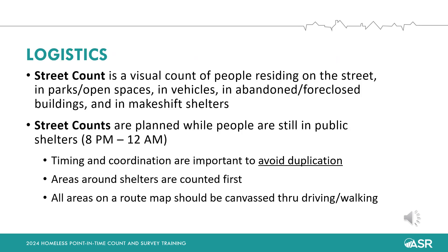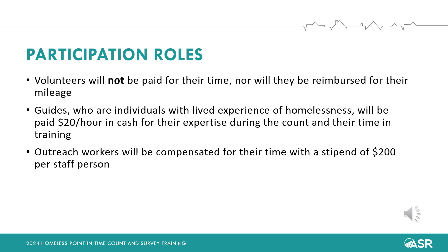The general street count is a visual count of people residing on the streets, in parks and open spaces, in tents, in vehicles, in abandoned buildings, or in makeshift shelters constructed of tarps, cardboard, or other materials. The street count will be conducted during the evening hours on January 30th. To avoid duplication, we ask you to count the areas surrounding shelters first. There will be three types of participants in the general street count: volunteers, guides, and outreach workers.